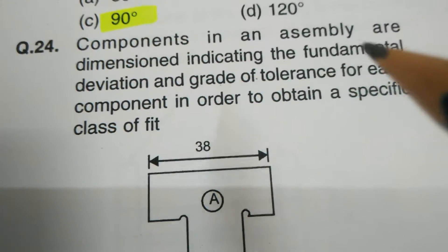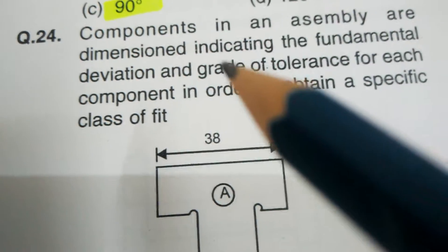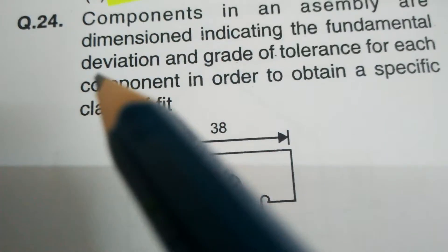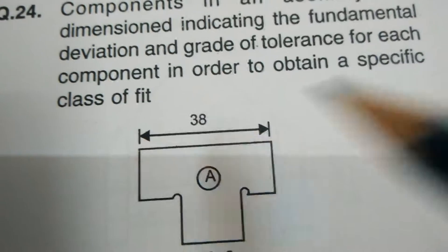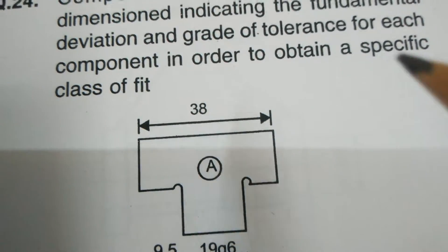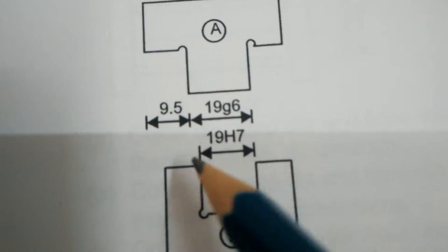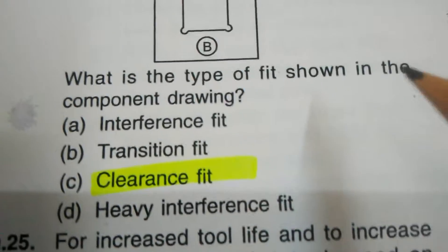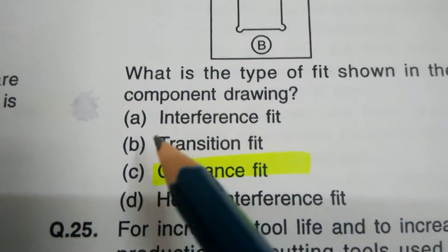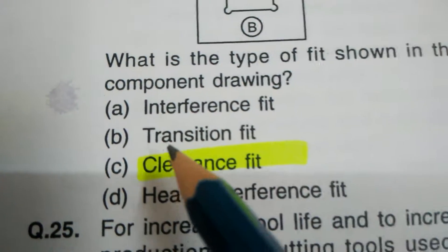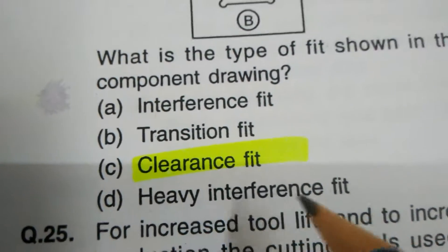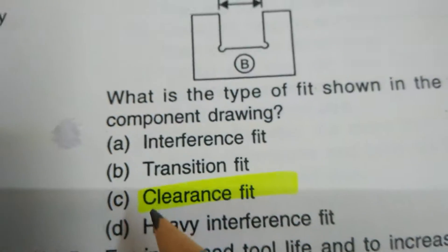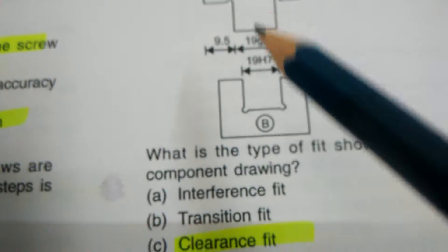Question number twenty-four. Components in an assembly are dimensionally indicated with the fundamental deviation and grades of tolerance for each component in order to obtain a specific class of fit. In this diagram, the tolerance is 19S7. The question is: what is the type of fit shown in the component drawing? Options: interference fit, transition fit, clearance fit, heavy interference fit. The correct answer is: clearance fit.